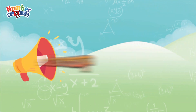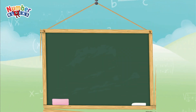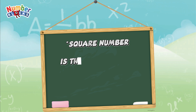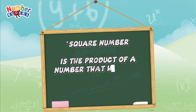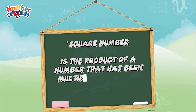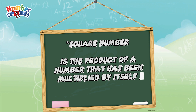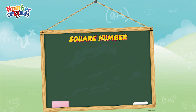Let's do a recap. A square number is the product of a number that has been multiplied by itself. Let's learn square numbers. Let's begin.